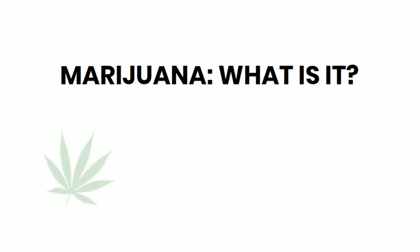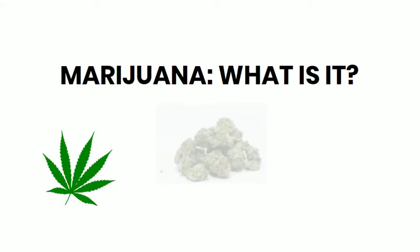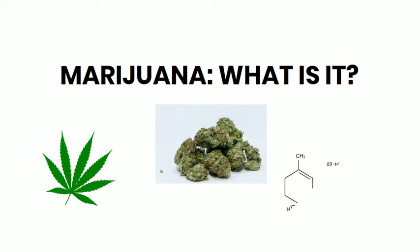Marijuana, also known as cannabis, weed, pot, or kush, comes from a flowering plant. In its drug form, it is seen as dry leaves, flowers, stems, and seeds. The ingredient inside the marijuana drug is called delta-9-tetrahydrocannabinol, or just THC for short.